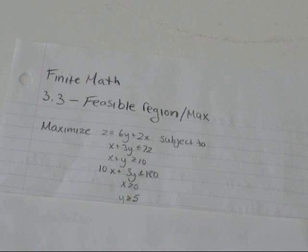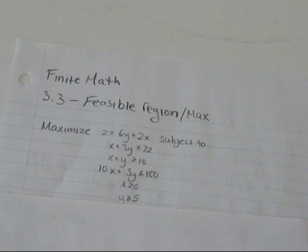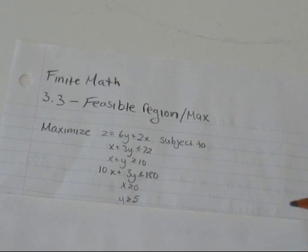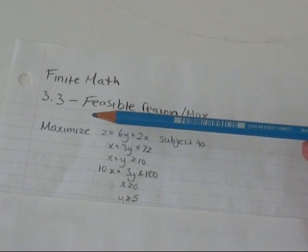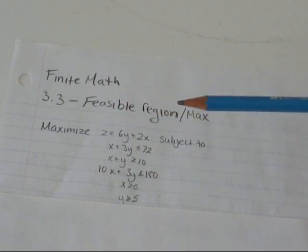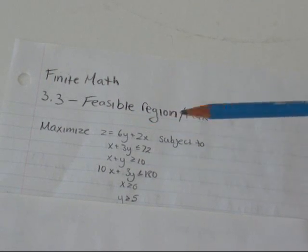Hi everyone. In this video, I am going to do two things. First, I'm going to show you how to draw a feasible region. And to do that, I'm going to use these five inequalities. And then once I have my feasible region graphed, I'm going to show you how to use it to do a maximization or minimization problem. And I'm going to maximize z equals 6y plus 2x.